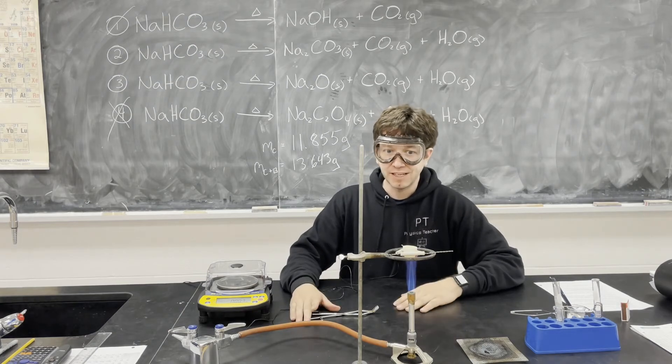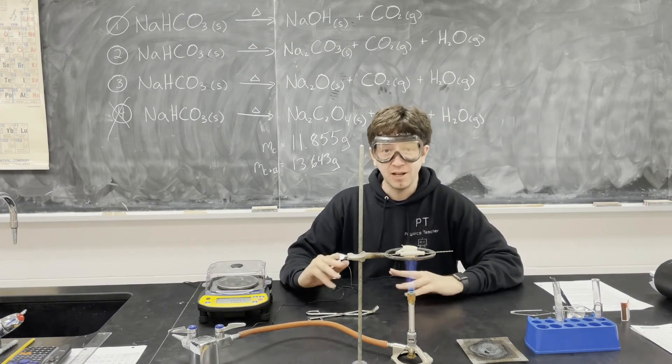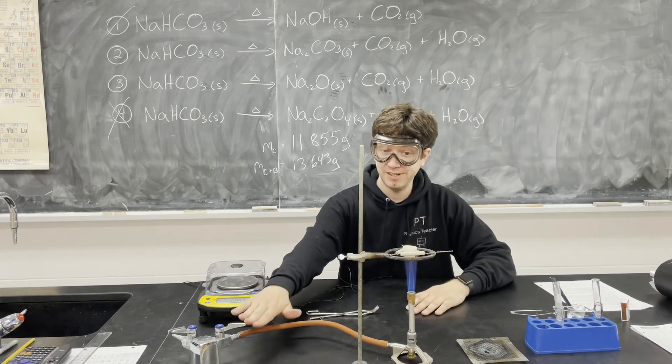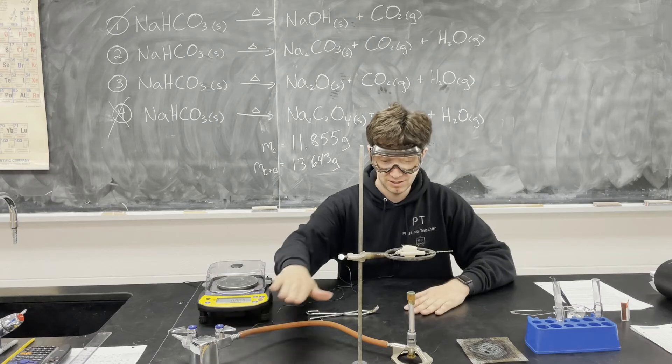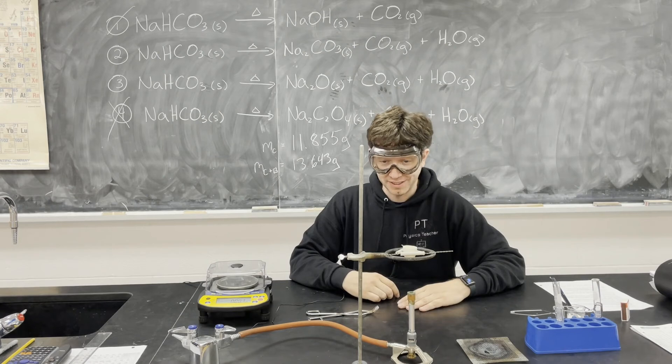All right, so that was a good seven or eight minutes of heating. Should only take about five, but just to be sure, most of it should have or all of it should have reacted by now. So we're going to turn off the Bunsen burner and before we measure it, we're of course going to let it cool for a few minutes.